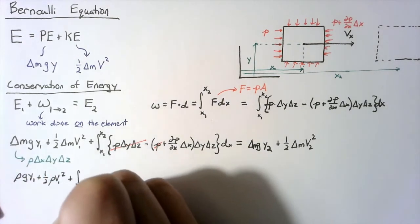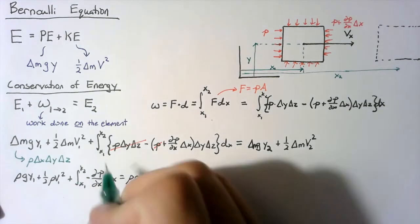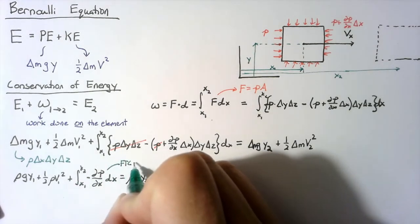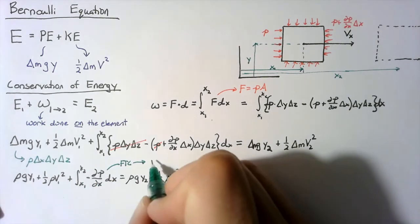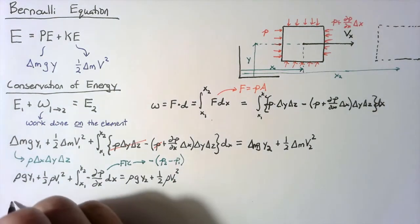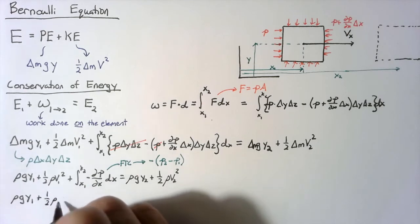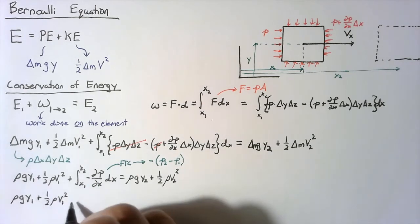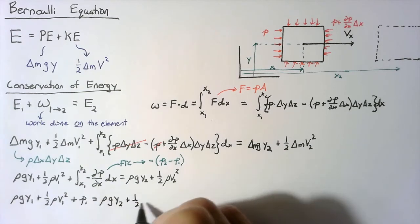So let's rewrite that now. We can use the fundamental theorem of calculus in order to rewrite this as negative p2 minus p1. So we end up with rho g y1 plus one-half rho v1 squared plus p1. That's going to be equal to the exact same for state two.